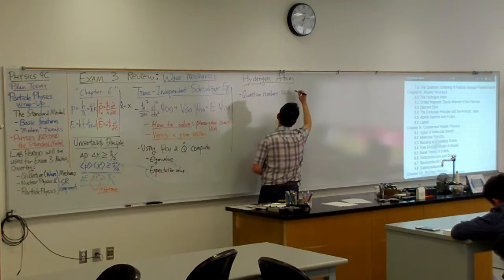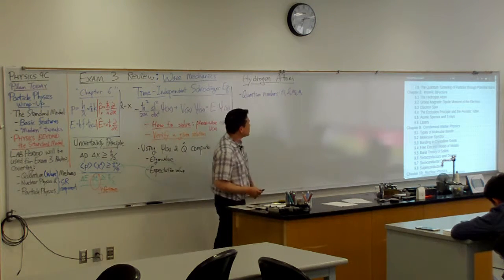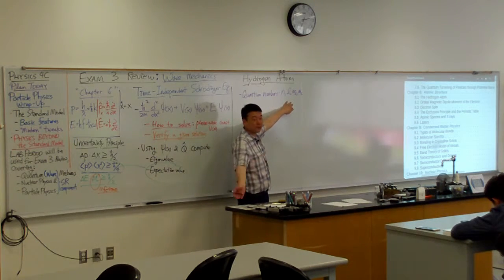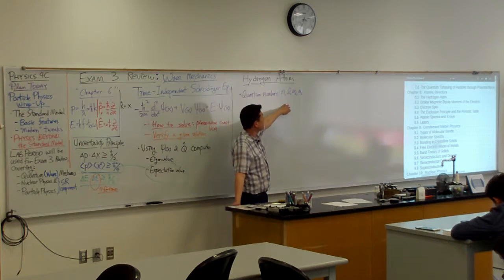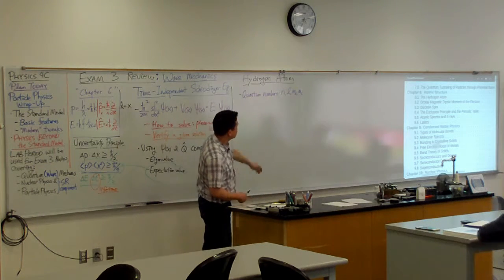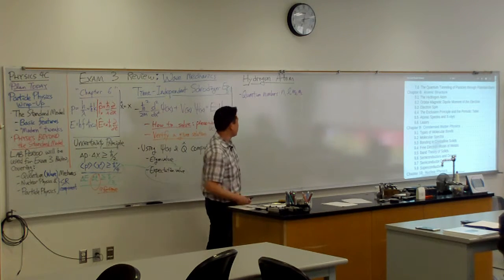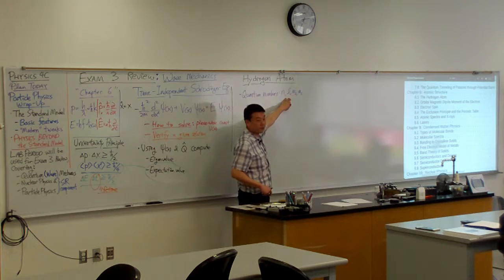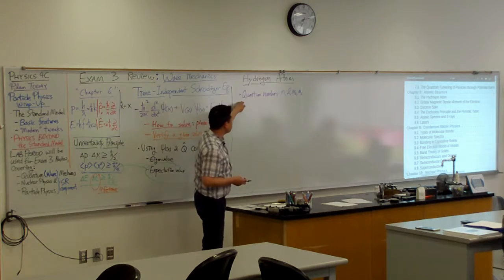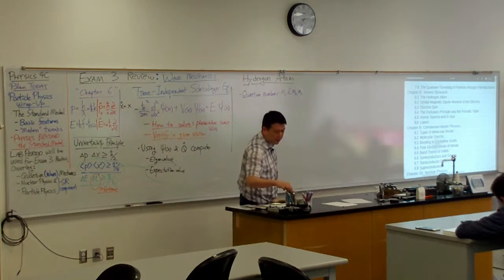There are four of them: N, L, M sub L, and M sub S for the electron. That's going to be the biggest thing because this is how the solutions are characterized. And even though I won't ask you to come up with those solutions on your own, these describe their very basic properties. So this is kind of a switching point where we are no longer deriving things for ourselves. We are more referring to the work other people have done.